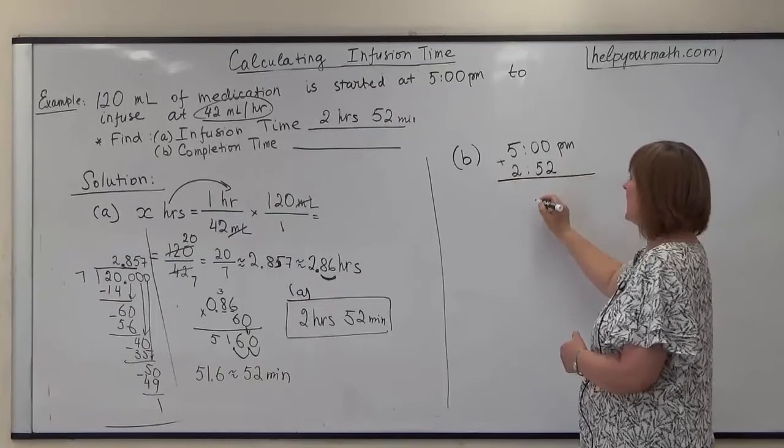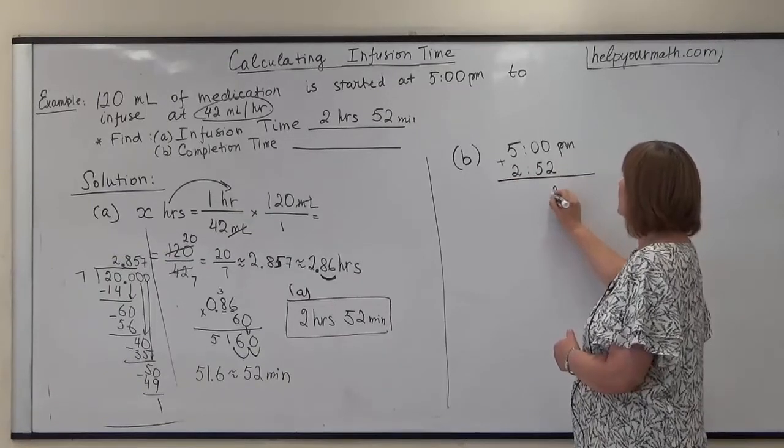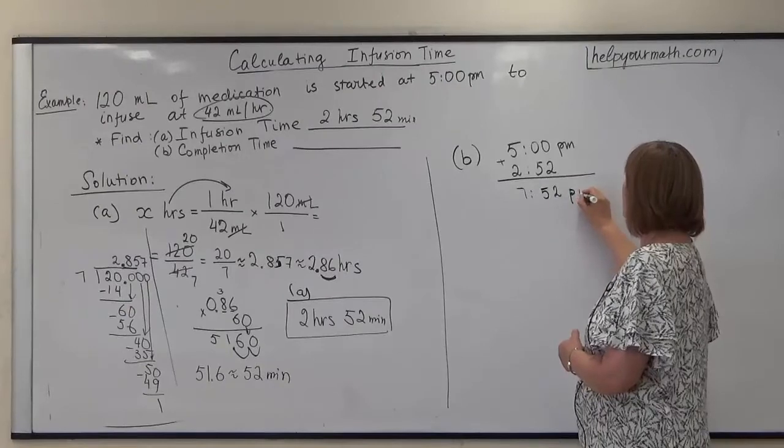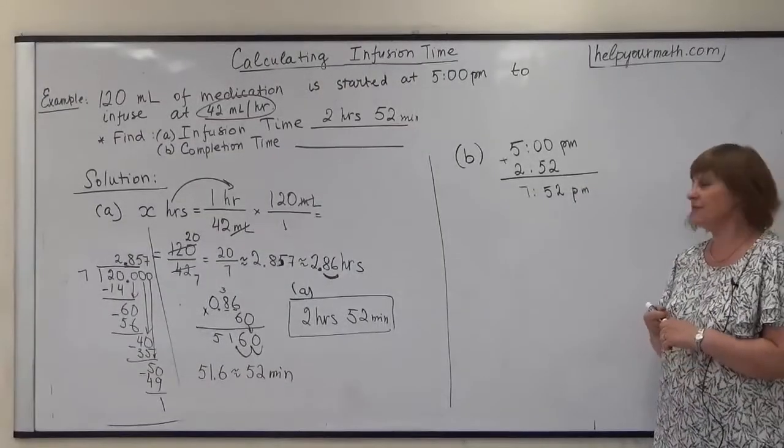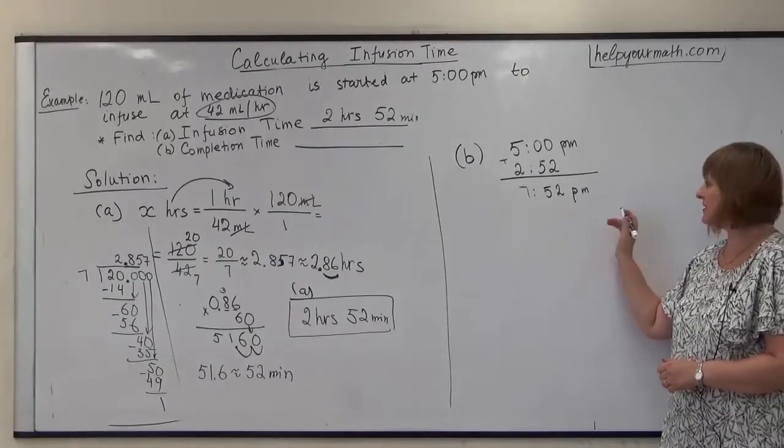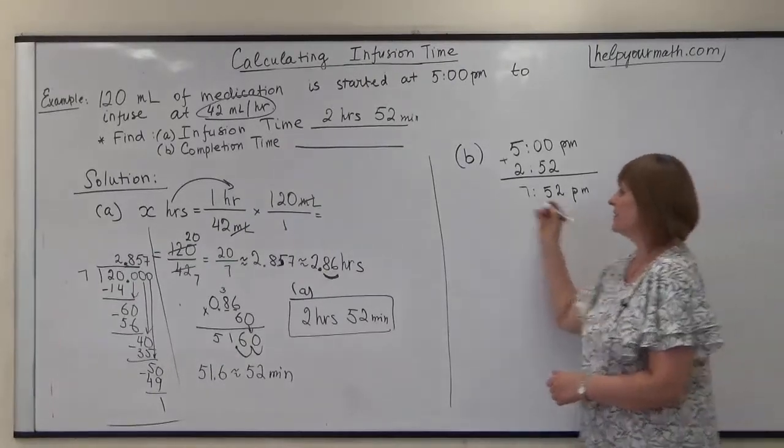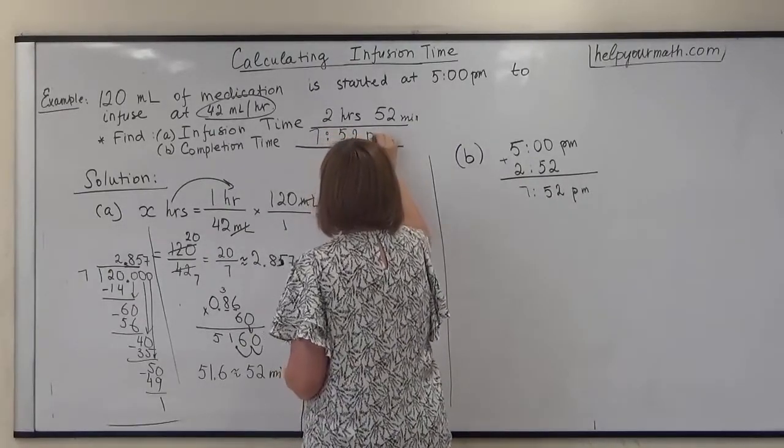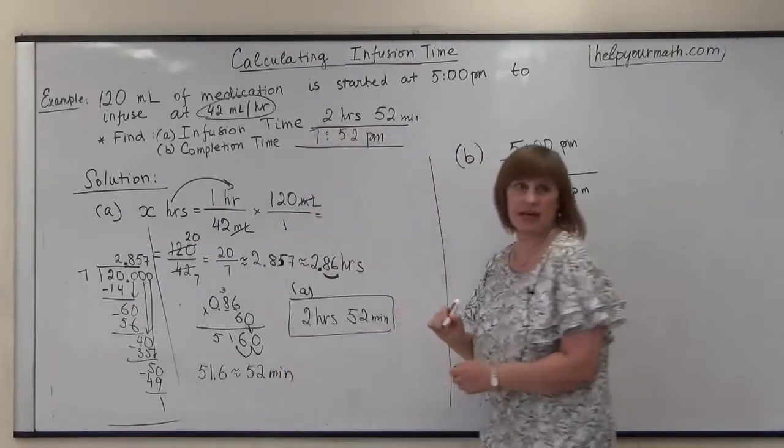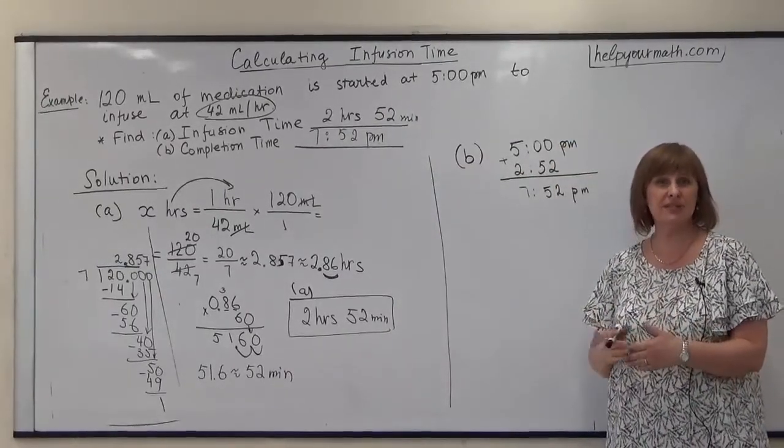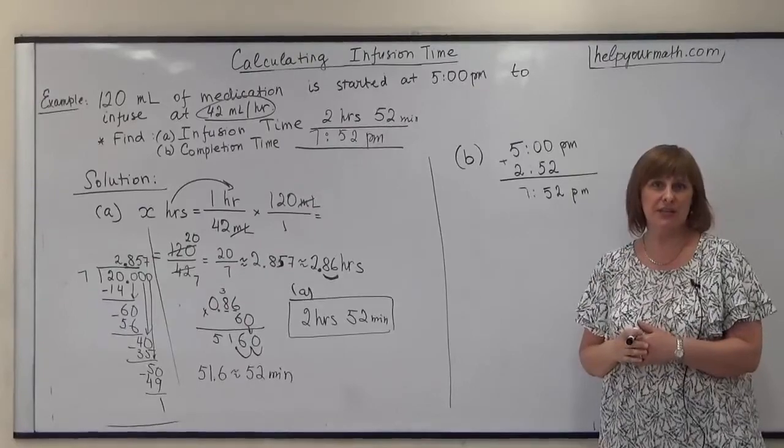So the total time will be 5 plus 2 is 7. So the answer for this problem is 7:52 p.m., and this is our traditional time. So we will write here 7:52 p.m., traditional time. And if you would like to know more how to convert it in military time, please watch our next videos.